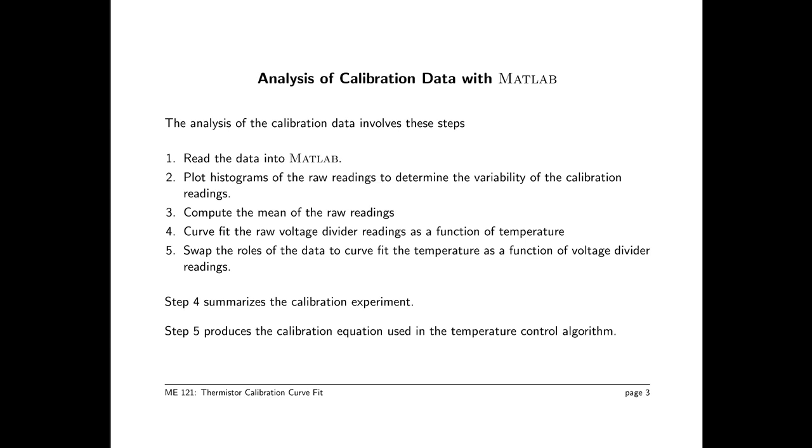The calibration data reduction follows these steps. You read the data from the previous slide into MATLAB. To investigate the quality of that data, you're going to plot histograms for each reading, each temperature setting of the calibration experiment. Inspecting the histograms allows you to determine that the data is good. And then you can compute the mean of each column of raw readings. And then the question is how to convert that into a function. Step four describes making a curve fit of voltage as a function of temperature. Step five is useful because that produces a function that you can use in your temperature control algorithm.